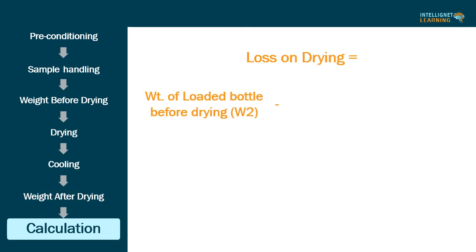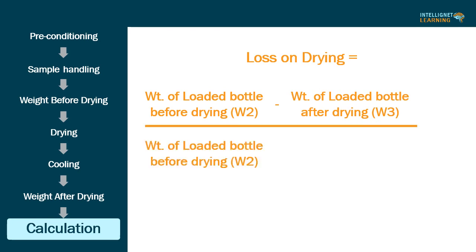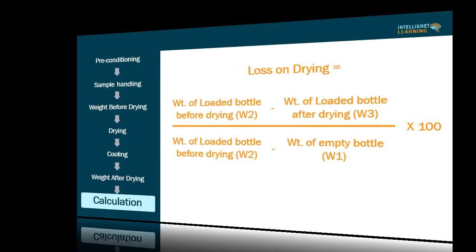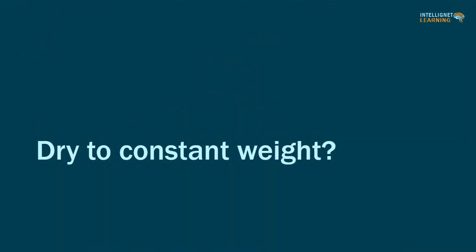Seventh step, calculation of loss on drying: Calculate loss on drying by: weight of loaded bottle before drying W2 minus weight of loaded bottle after drying W3, divided by weight of loaded bottle before drying W2 minus weight of empty bottle W1, multiplied by 100.